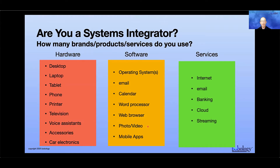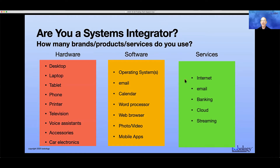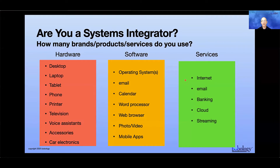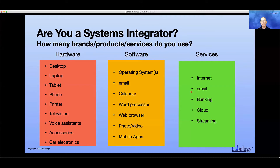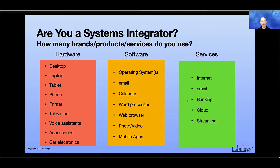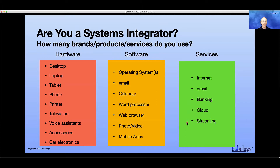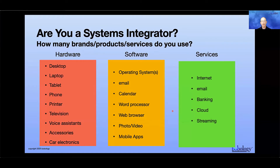And then you've got all the mobile apps on your smartphone as well. It starts to get a little discouraging all the ways technology has infiltrated our lives. Then you've got services on top of it: your internet service from a different company, your email service, online banking, a cloud, a streaming service like Amazon Prime or Netflix. To make all of this work together, there is only one person responsible — that's you — unless you pay somebody, and that can be really expensive.